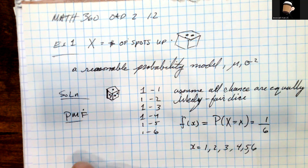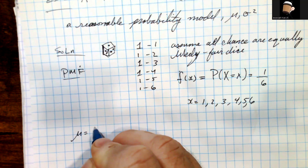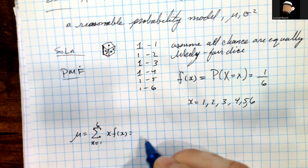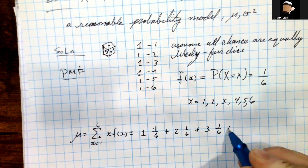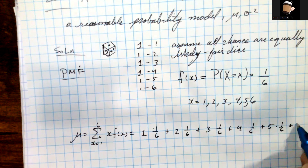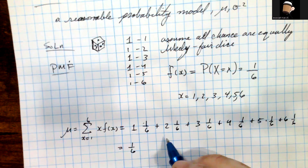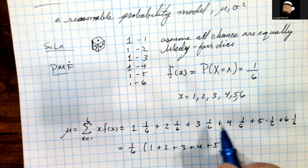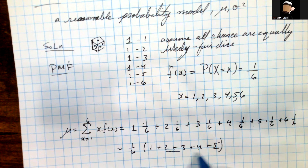Now that we have the probability mass function, let's compute the mean and variance. The mean equals the sum from x = 1 to 6 of x times f(x). That's 1·(1/6) + 2·(1/6) + 3·(1/6) + 4·(1/6) + 5·(1/6) + 6·(1/6). Factoring out 1/6, we get (1/6) times (1 + 2 + 3 + 4 + 5 + 6). Pairing terms: 1+4=5, 2+3=5, 5+6 gives a total of... let's see, that's 15 over 6 so far.